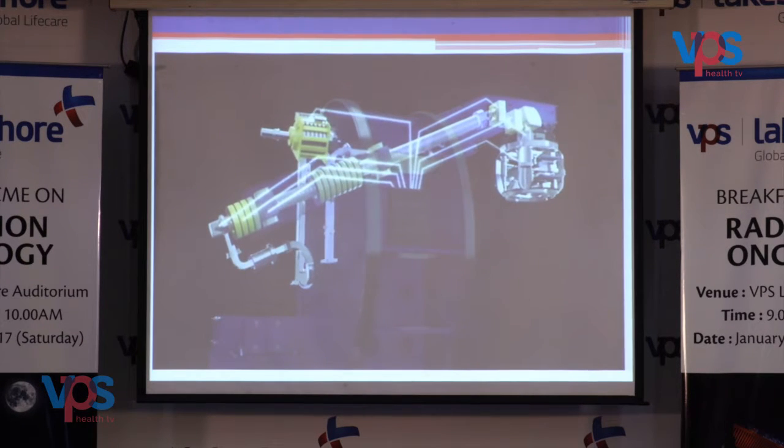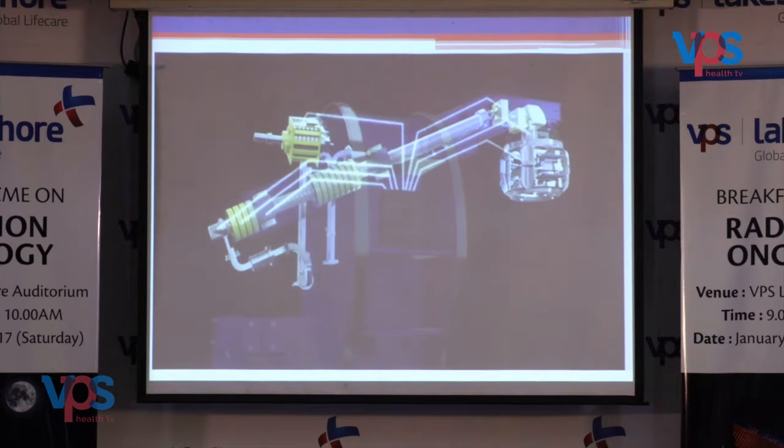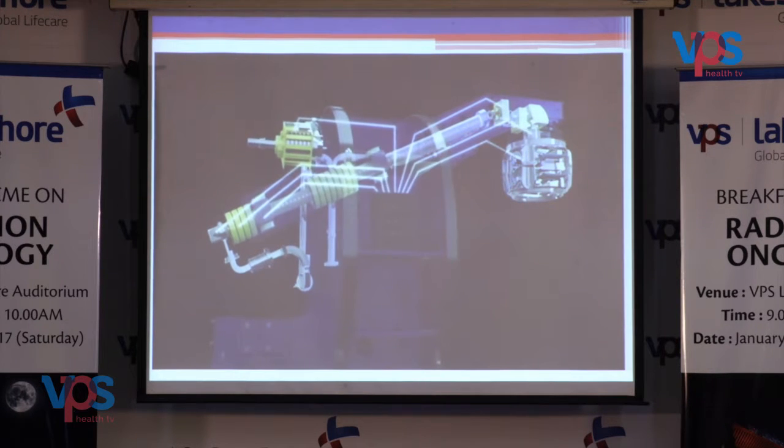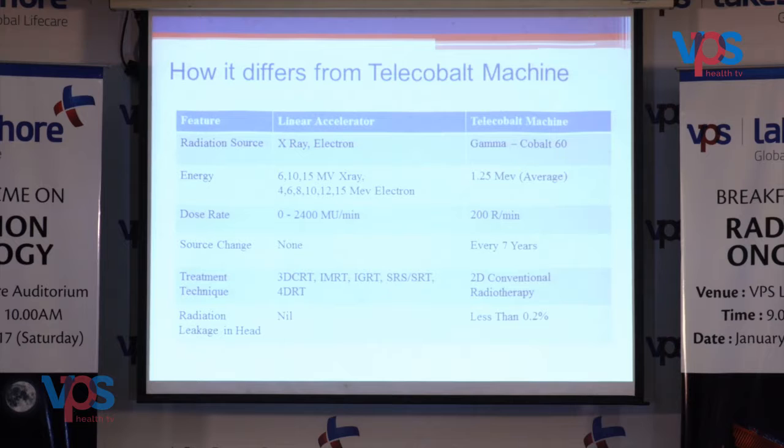All these different components are controlled by a computer system in the Linac. Until 1970, the Cobalt-60 teletherapy machine was mostly used for delivering radiation therapy; later, linear accelerators replaced it because of several advantages. The key difference is that linear accelerators use X-rays or electrons as the radiation source, whereas in the Cobalt-60 teletherapy machine, a radioactive isotope — Cobalt-60 — emits gamma rays.